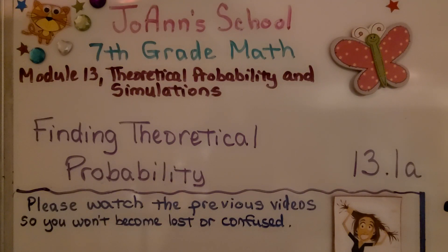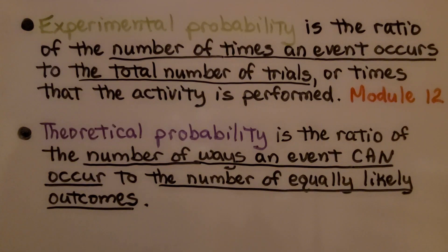Lesson 13.1a, Finding Theoretical Probability. Experimental probability is the ratio of the number of times an event occurs to the total number of trials, or times that the activity is performed. We covered that in module 12.